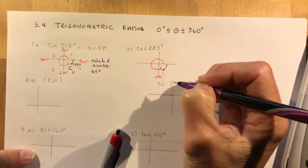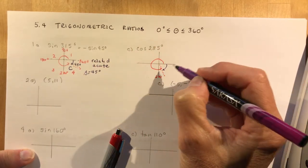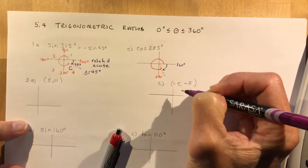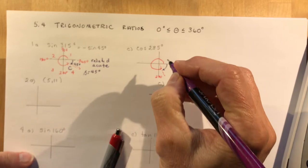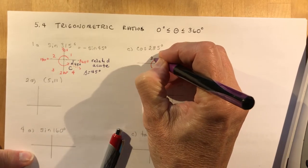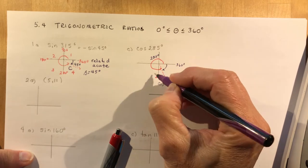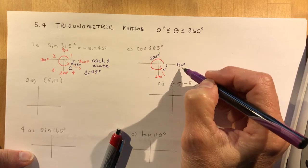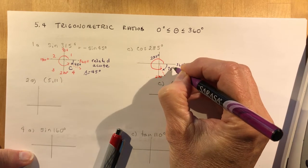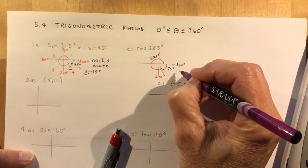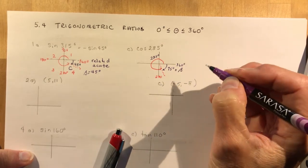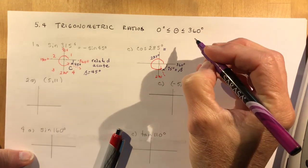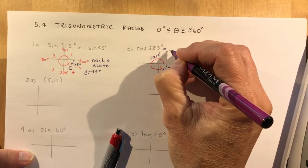So beta is here — that's what they ask you to call it. From 285 degrees around to 360: 285 to 300 is 15 more, and then 60 more, so this is 75 degrees. Beta is 75 degrees. And the sine in this quadrant would be positive, so this is the same as the cosine of 75 degrees.